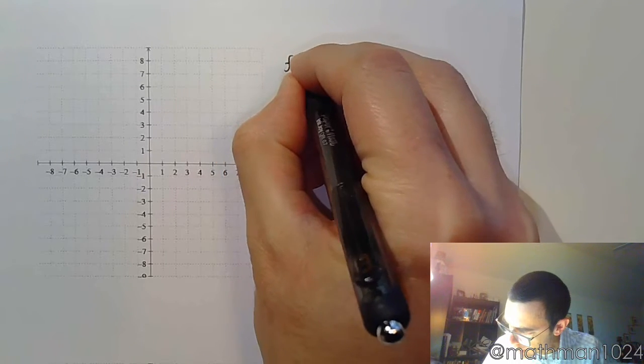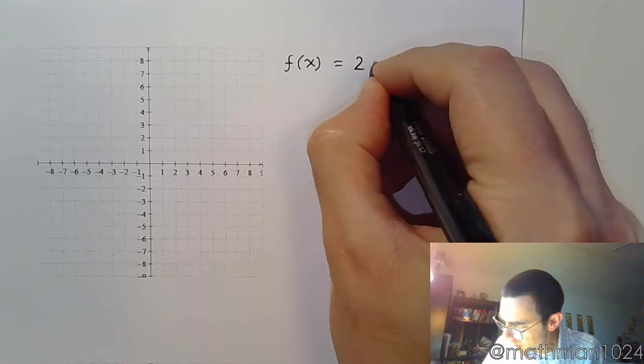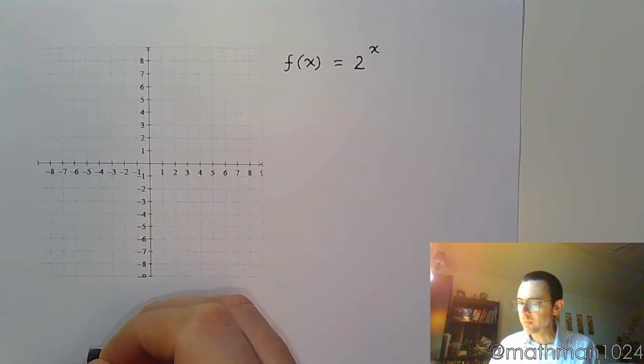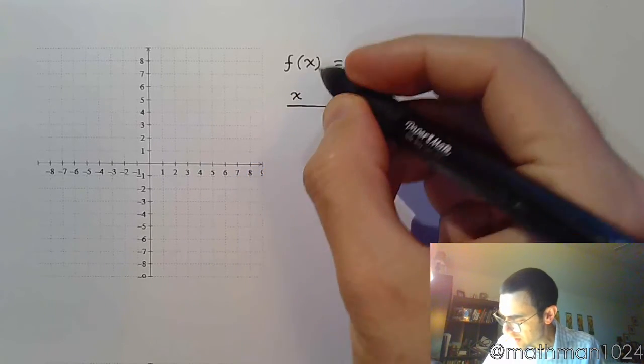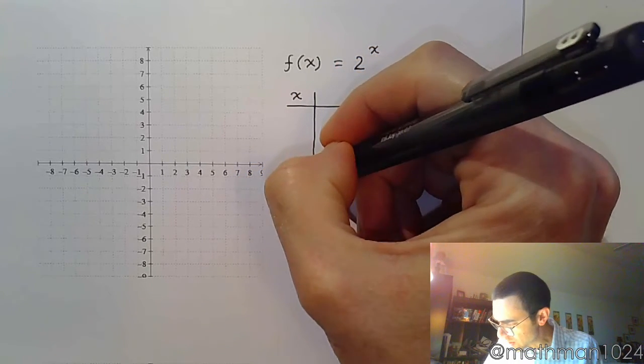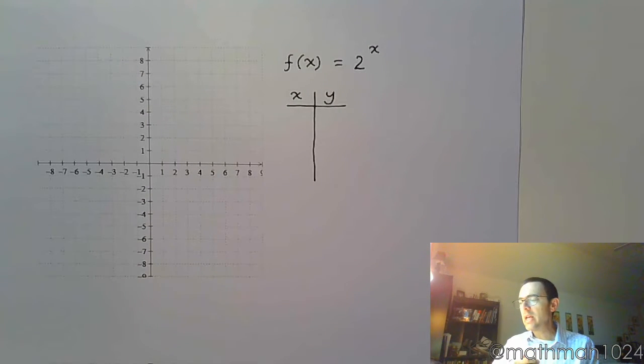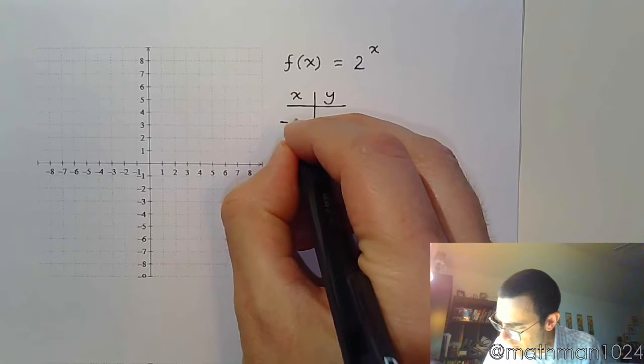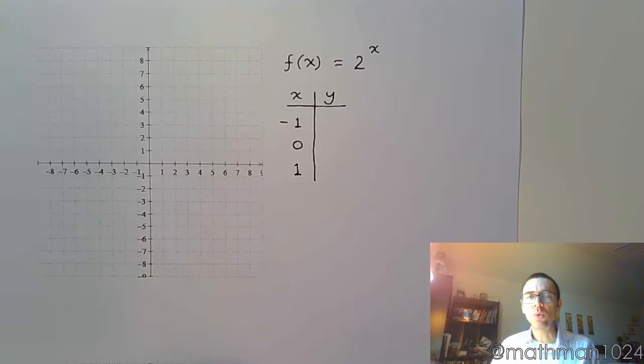So your most basic exponential function is f(x) = 2^x. Now, there are certain key points that we have for this. So I'm going to write those here specifically for this function, and then we're going to look at what the key points would be for just any normal exponential function. The key points tend to revolve around plugging in -1, 0, and 1.